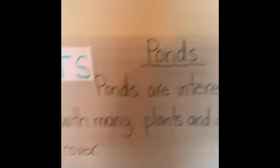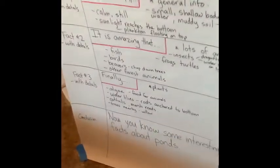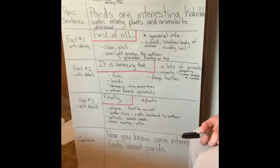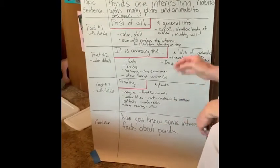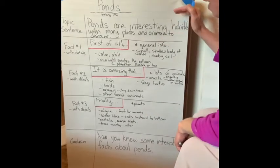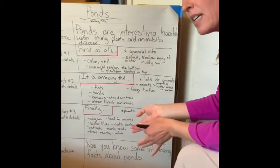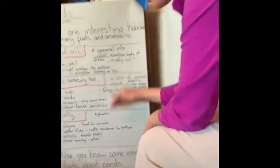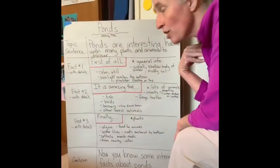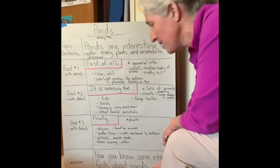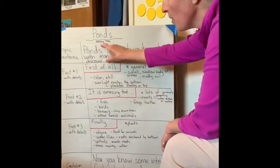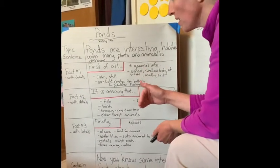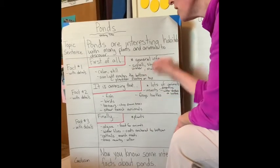We're now going to turn to the graphic organizer that I made. Once I had my brainstorm and figured out what facts I wanted to include, I started organizing my piece of writing with a graphic organizer. This does not need to be done in complete sentences — it's kind of like a guide to how you're going to structure your writing. What I do like to write in complete sentences is the topic sentence and the conclusion — the opening sentence and the ending sentence — so I firmly know what I'm going to start with and end with.